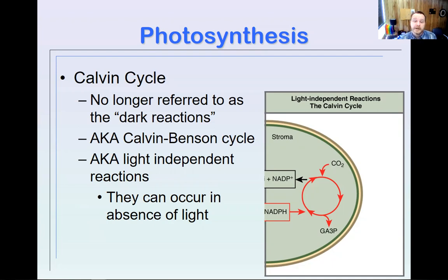What does the Calvin cycle do? The Calvin cycle pulls in CO2 and generates this G3P - GA3P or G3P - which is just a three-carbon sugar that we can use to make six-carbon sugars like glucose and fructose. These can occur in the absence of light. They don't have to occur in the dark, but they can occur in the absence of light.